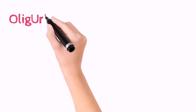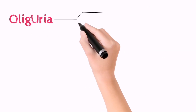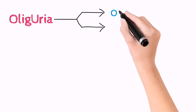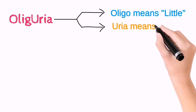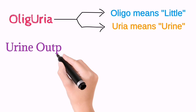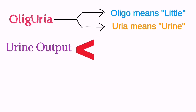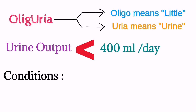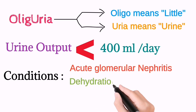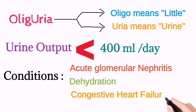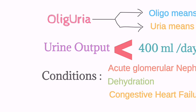Oliguria — 'oligo' means little and 'uria' means urine. So when the urine output becomes less than 400 milliliters per day, the condition is called oliguria. Conditions which cause oliguria include acute glomerulonephritis, dehydration, and congestive heart failure.